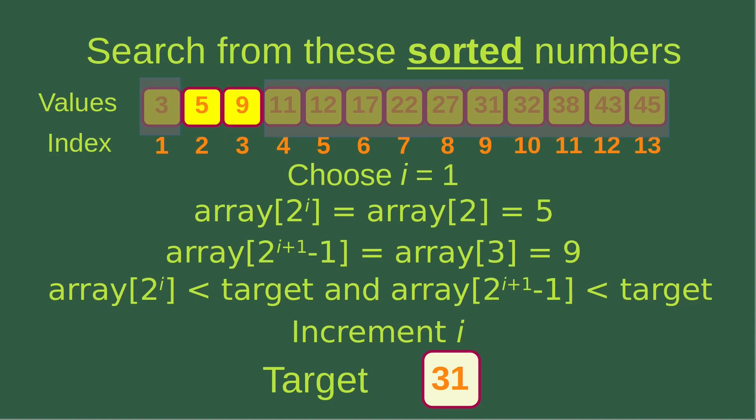Now we choose i equals 1. With i equals 1, the left-hand side of the interval corresponds to index 2, which has the value 5, and the rightmost element of that interval is array[3], which is equal to 9. We can see that both 5 and 9 are smaller than the target, so that particular interval isn't able to contain our target. In this case we increment the value of i.